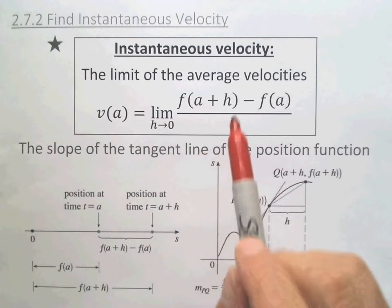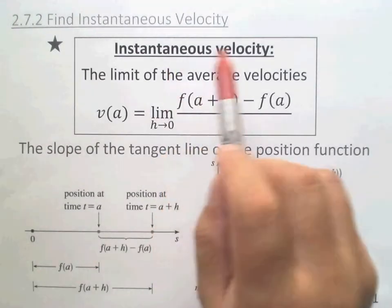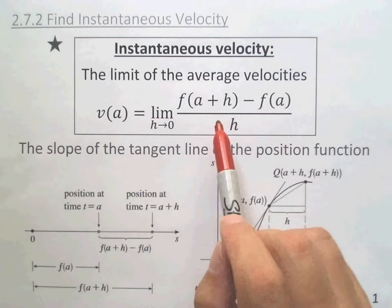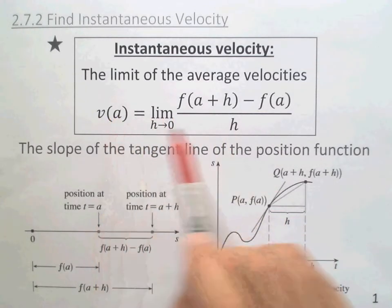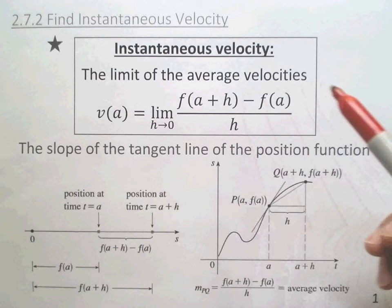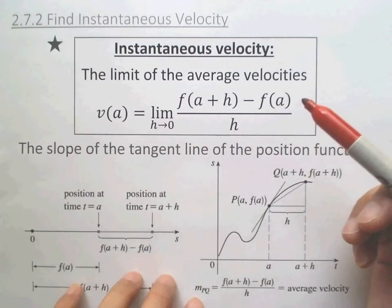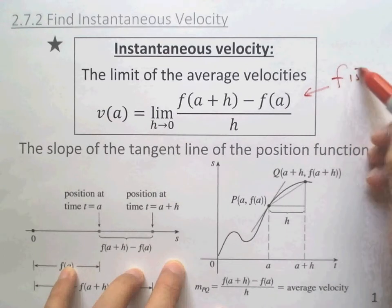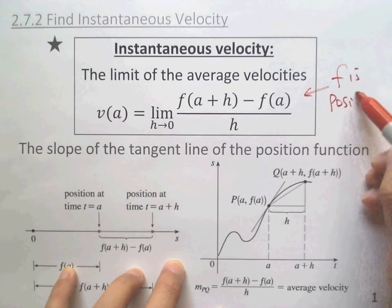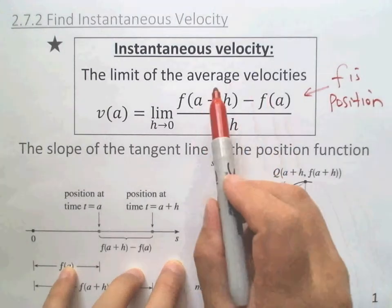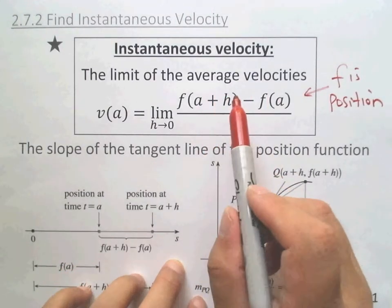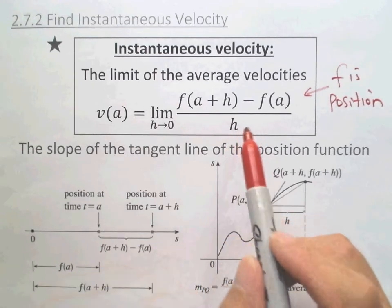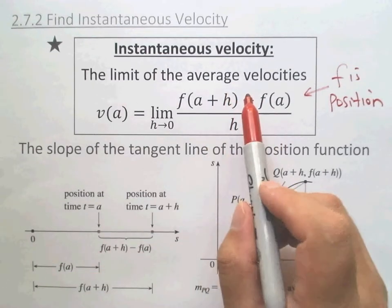How do you find the instantaneous velocity? We can find the average velocity first and then take a limit. The average velocity uses f as the position function. The numerator is the change in distance, the change in position, and h is the change in time. This is the average velocity. Take a limit, and we go to the instantaneous velocity.